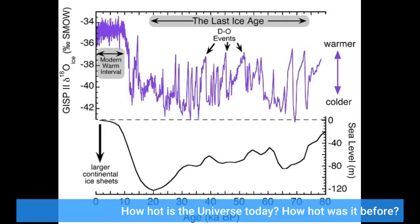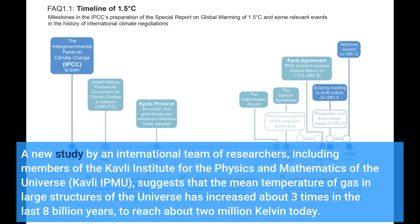How hot is the universe today? How hot was it before? A new study by an international team of researchers, including members of the Kavli Institute for the Physics and Mathematics of the Universe (Kavli-IPMU), suggests that the mean temperature of gas in large structures of the universe has increased about three times in the last 8 billion years.